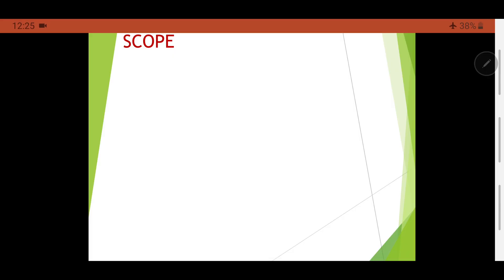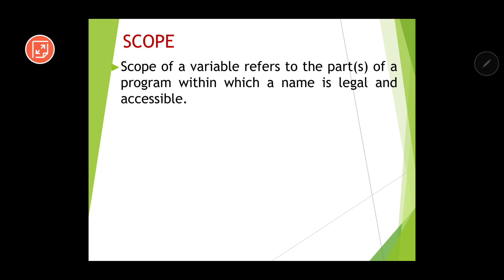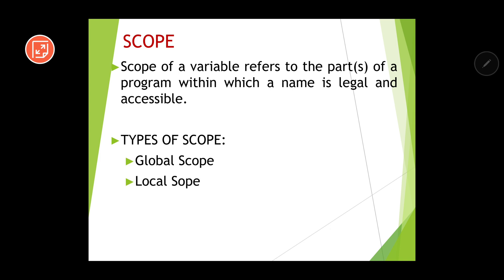Now let us understand what we mean by scope. The scope of a variable refers to the part of a program within which a name is legal and accessible. In a program there are various parts, and within what part a particular variable is valid is known as its scope. There are two types of scope: global scope and local scope.